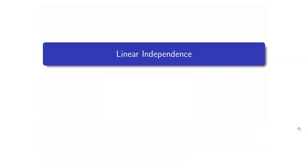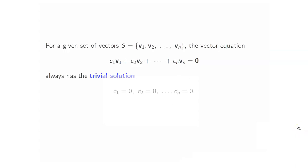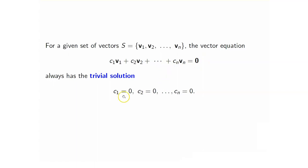In this lesson, I'm going to talk about linear independence. For a given set of vectors, let's call that set S, where S contains the vectors V1, V2, up to Vn. The vector equation C1·V1 + C2·V2 + ... + Cn·Vn = 0 always has the trivial solution. If we set all the constants C1, C2, up to Cn to be zero, of course this vector equation would be true. We say that this solution is the trivial solution when all the constants are equal to zero.